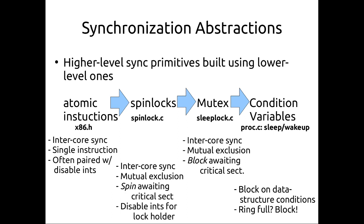At the bottom we have atomic instructions, which are in xv6's x86.h, and these provide inter-core synchronization. An atomic instruction is atomic not just on the single core you're running it on, but also on the word of memory where you're performing it — it's atomic across different cores as well. So executing two atomic instructions on the same word in memory on two separate cores, one will finish before the other with no interleaving of constituent parts.